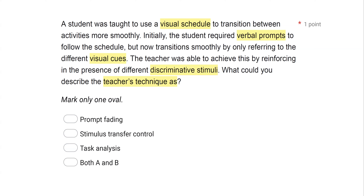Going from needing a certain amount of prompts to not needing them, we can call that prompt fading — we've faded out those prompts. So A, prompt fading, looks like our answer. However, we also have B, stimulus transfer control, which is essentially prompt fading. We are taking control from one SD and transferring it to another. By reinforcing in the presence of different SDs, the teacher is transferring control from one discriminative stimulus to another. Task analysis has nothing to do with this question — easy to eliminate. Our answer is both A and B. If you get stimulus transfer control confused, just think prompt fading.